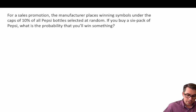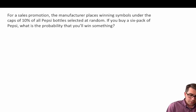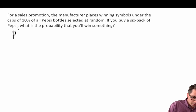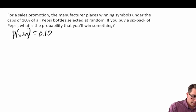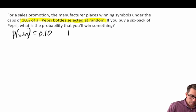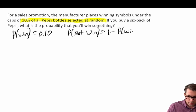Now let's go to a different question. For a sales promotion, the manufacturer places winning symbols under the caps of 10 percent of all Pepsi bottles selected at random. If you buy a six-pack of Pepsi, what is the probability that you'll win something? Let's write down what we're given: the probability that you win is equal to 0.10. That means the probability of a non-win is equal to 1 minus 0.10, which equals 0.90.